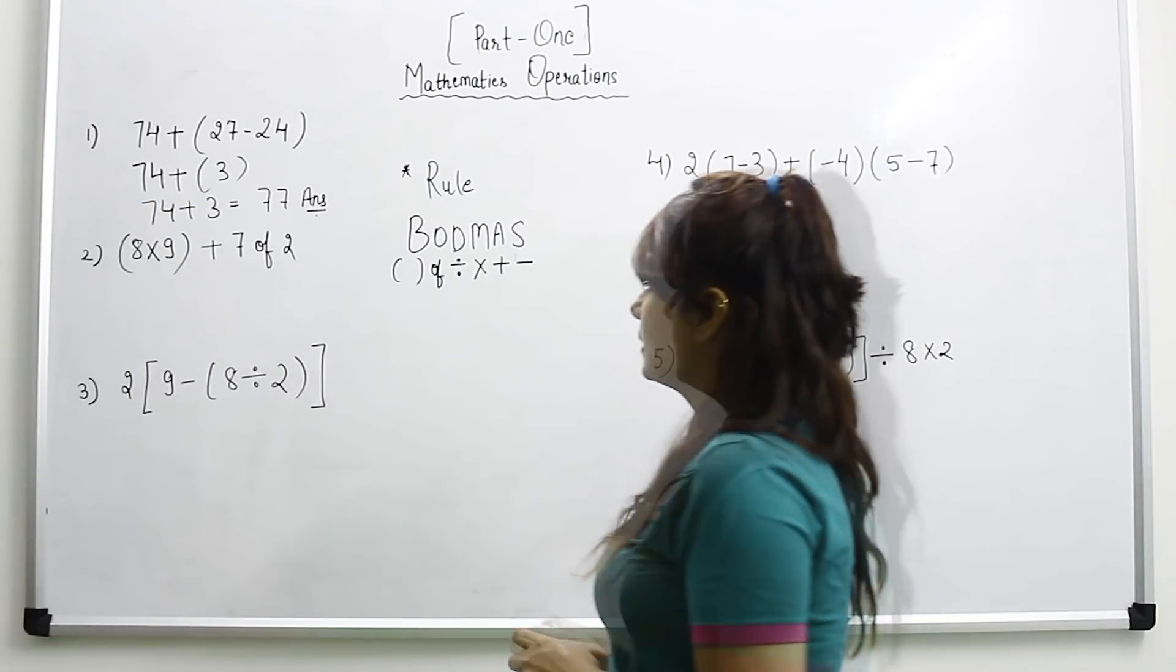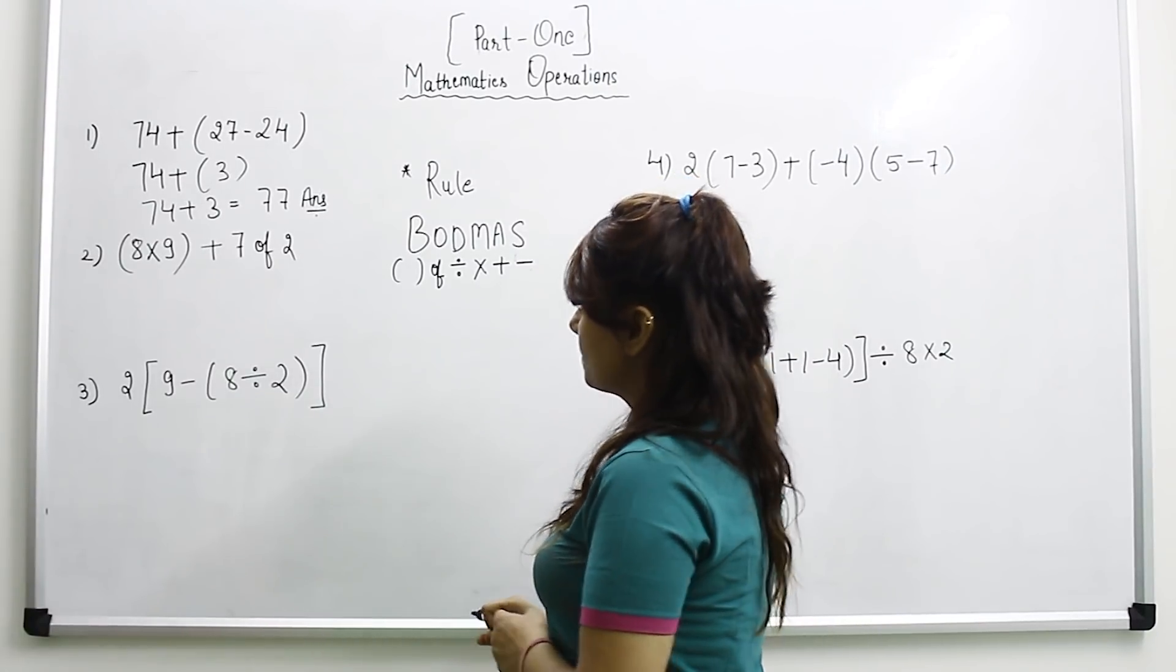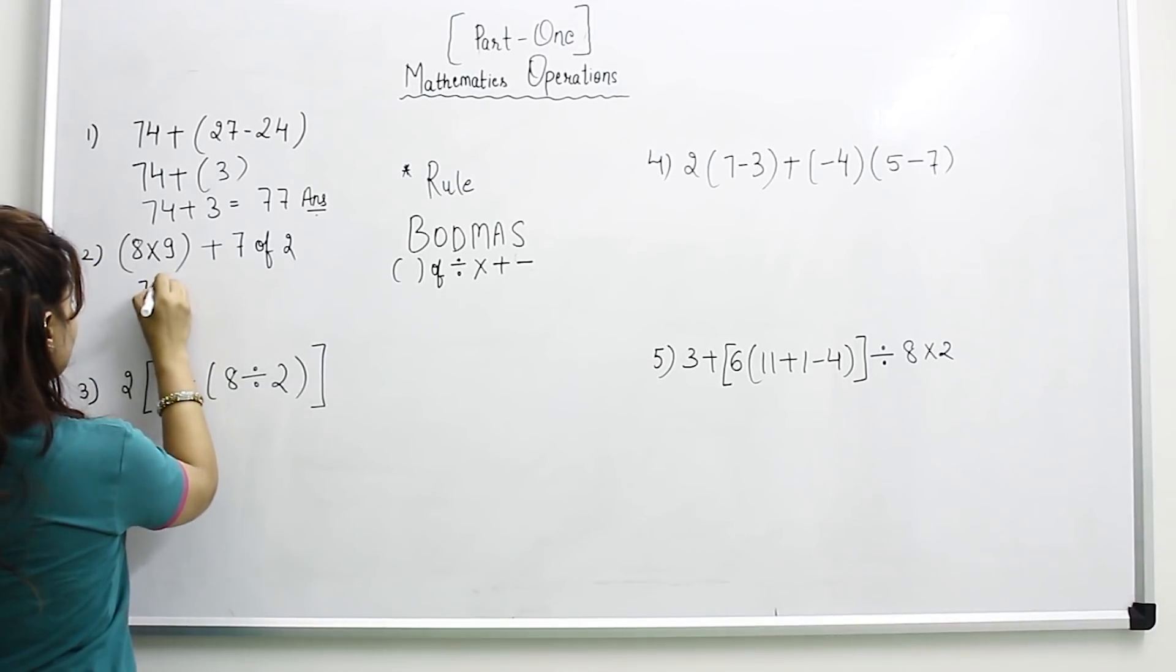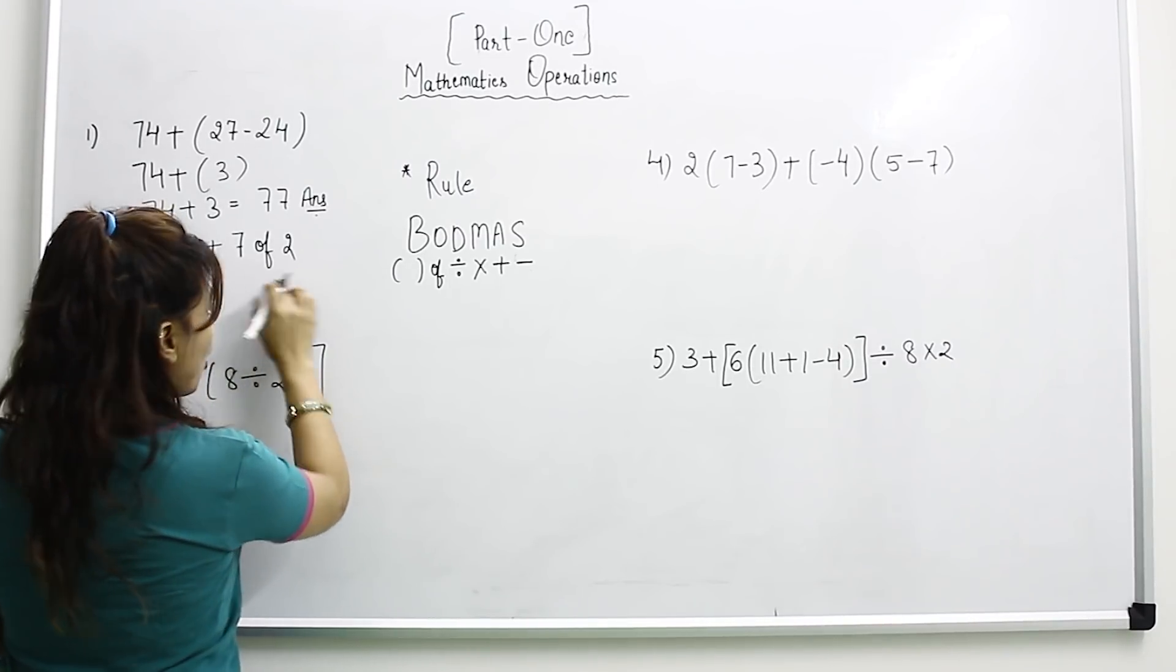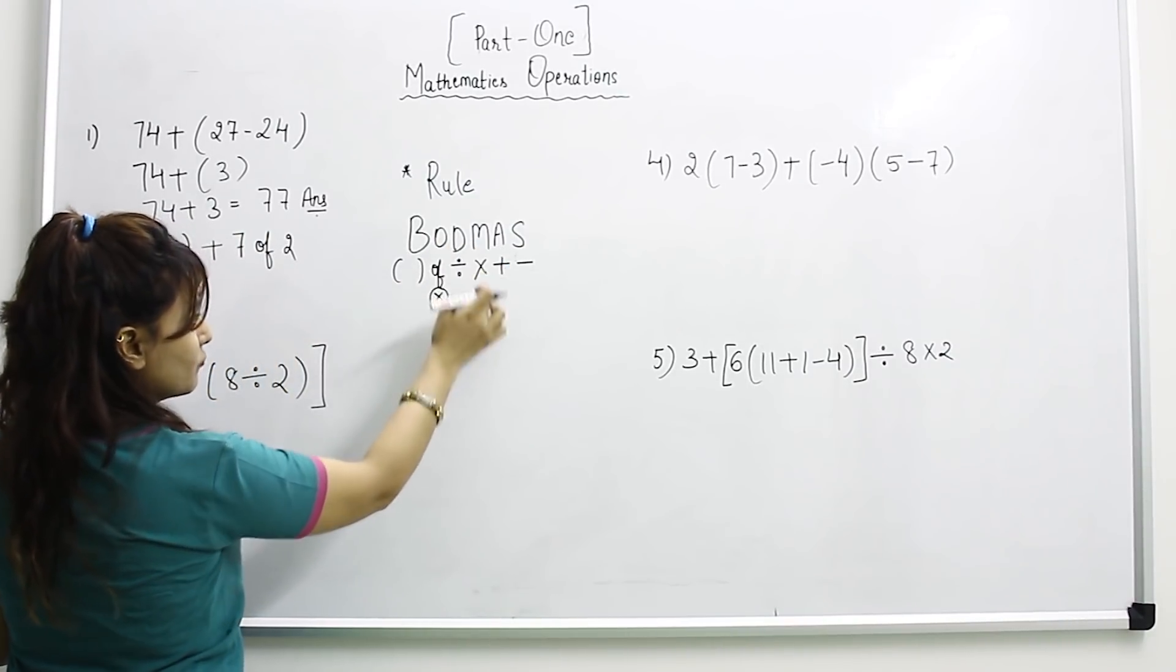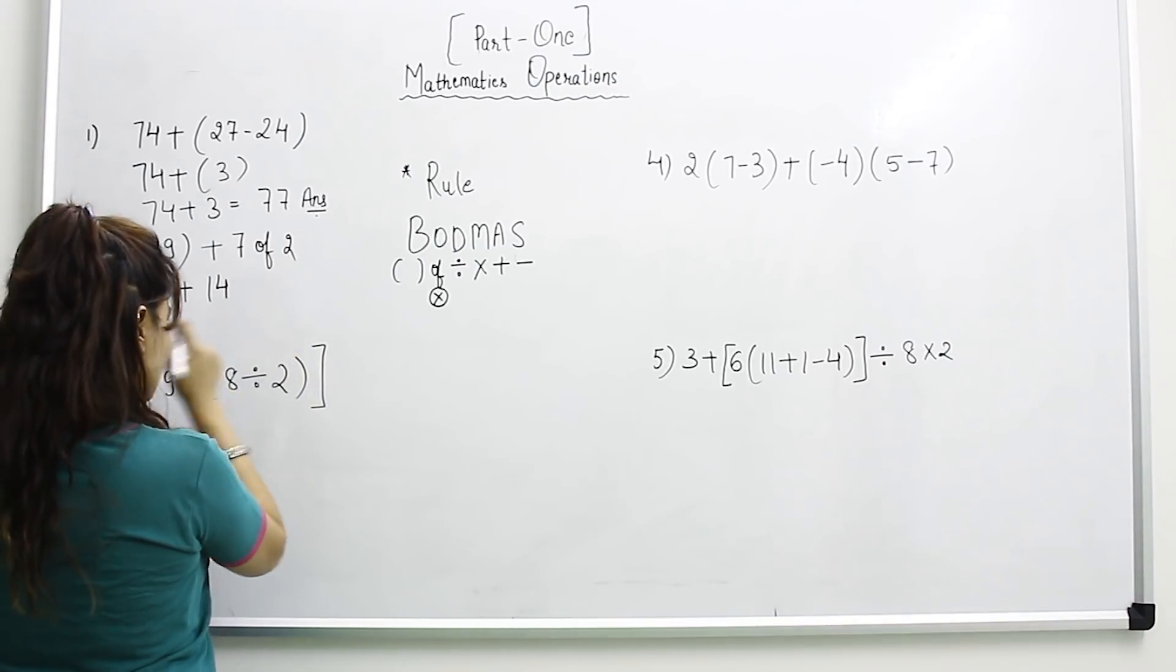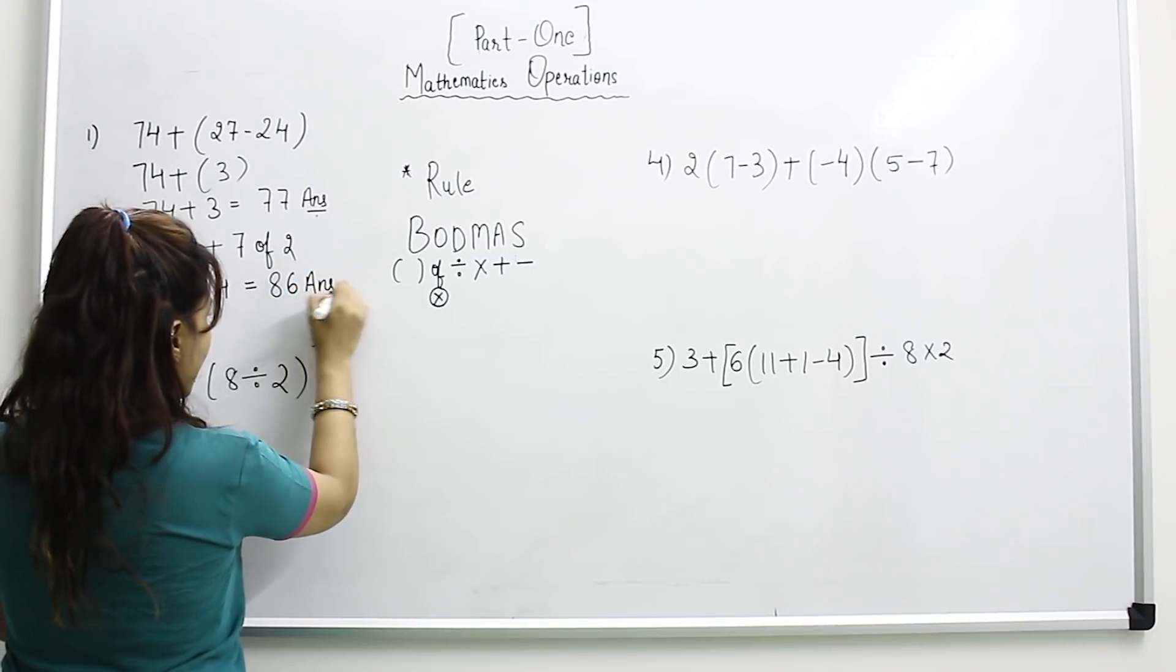Let's come to the second question: (8 into 9) plus 7 of 2. Look at this rule. First we are supposed to solve bracket. When we solve the bracket, 8 into 9 equals 72 plus 7 of 2. Of indicates multiplication, but if there is O and M, we have to solve O first. 7 of 2 equals 7 into 2 equals 14. So what we are going to get is 86.